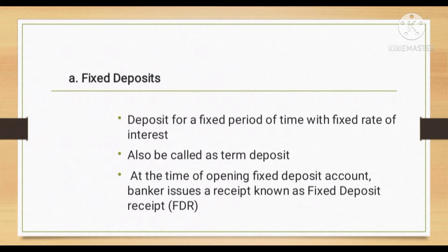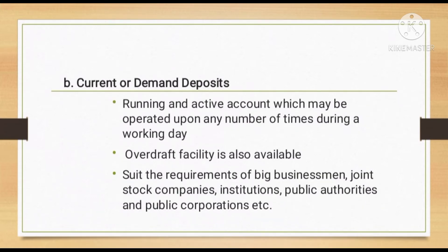The first type is fixed deposits. A fixed deposit is a type of deposit for a fixed period of time with a fixed rate of interest. It is also called a term deposit. At the time of opening a fixed deposit account, the banker issues a receipt known as a Fixed Deposit Receipt, or FDR.